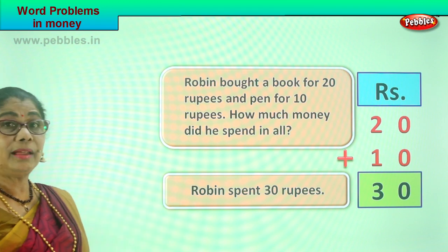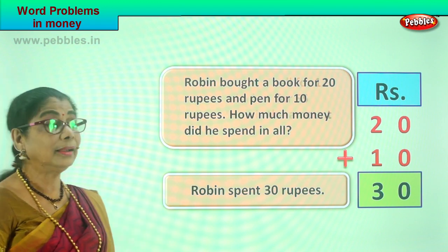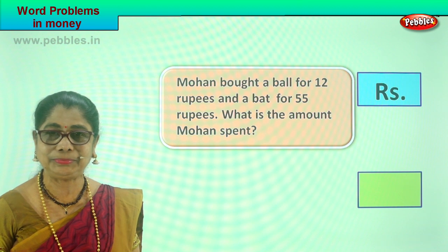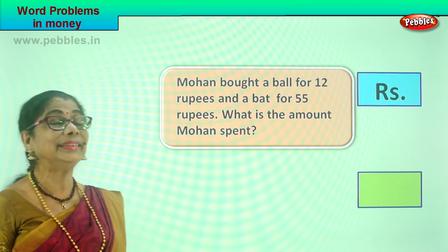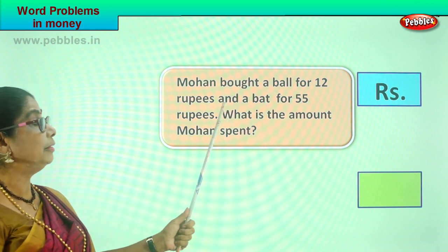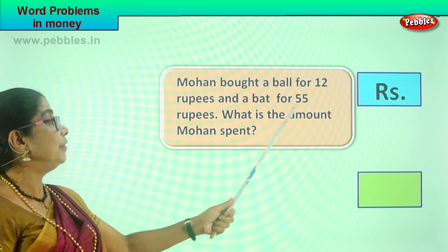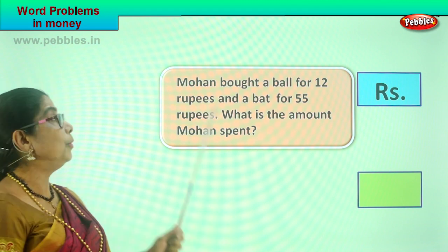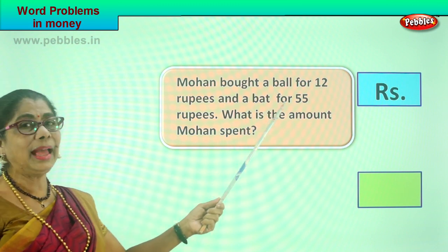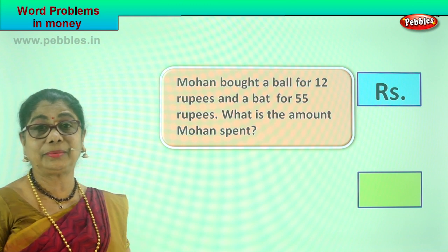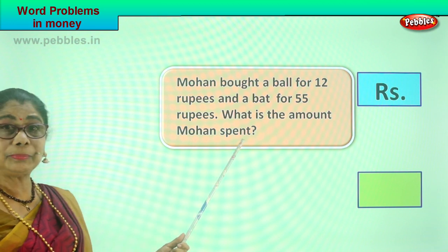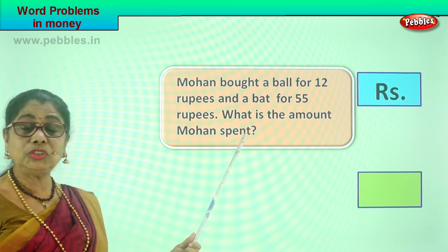Shall we take another word problem? Read together. Come, read along with me. Mohan is going shopping with his dad. What does Mohan want to buy? Mohan bought a ball for rupees 12 and a bat for rupees 55. So now Mohan is telling daddy: I like to buy a ball which is 12 rupees and a bat which is 55 rupees. What is the amount Mohan spent?